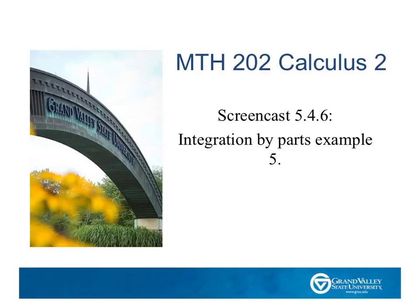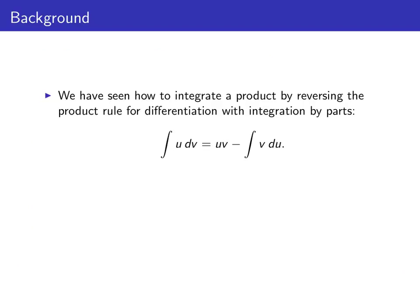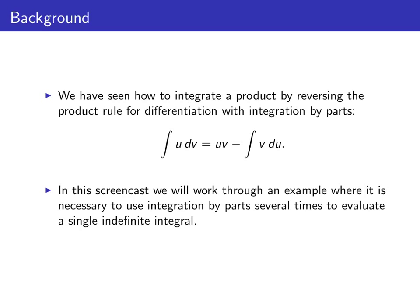Hello and welcome to the GVSU calculus screencasts. In this edition we will do an example of integration by parts. Recall that integration by parts undoes the product rule for differentiation. The rule for integration by parts is the integral of u dv equals uv minus the integral of v du. In this screencast we're going to work through an example where we need to use the integration by parts formula several times to evaluate a single definite integral.